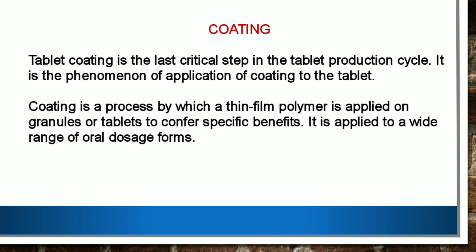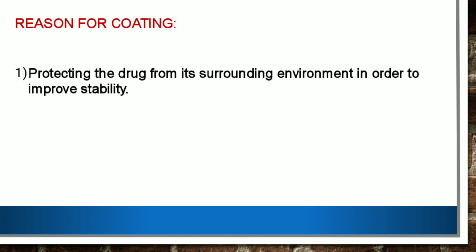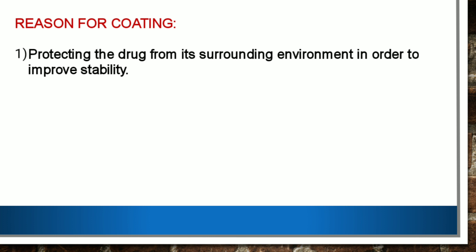Coating involves covering the outer layer of the tablet with different substances. Coating uses a range of traditional sugar coating to present polymers and polysaccharide-based coats. The type of coat depends on the specific functionality of the tablet as well as the target consumer of the tablet.